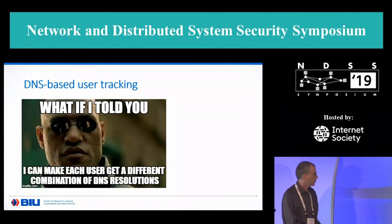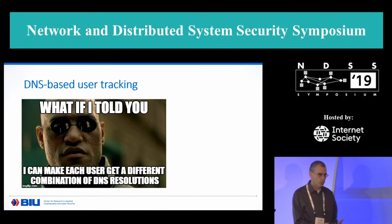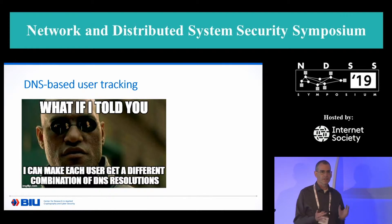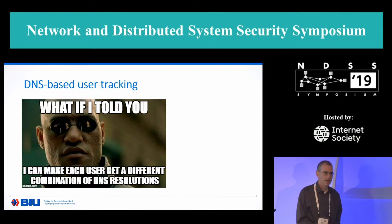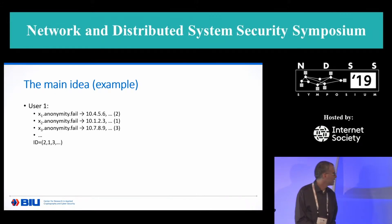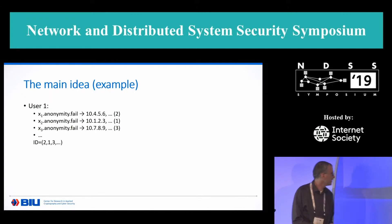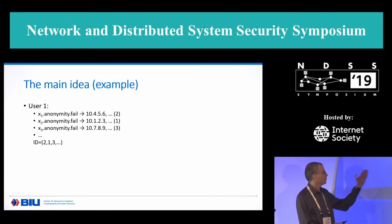The crux of our technique is the ability to make each user receive a different set of DNS resolutions. Why is that important, or how does that help us achieve our goal of DNS tracking? Let's say that user1 gets these resolutions for x1.anonymit.fail, x2.anonymit.fail, etc. And each resolution is a set of IP addresses.